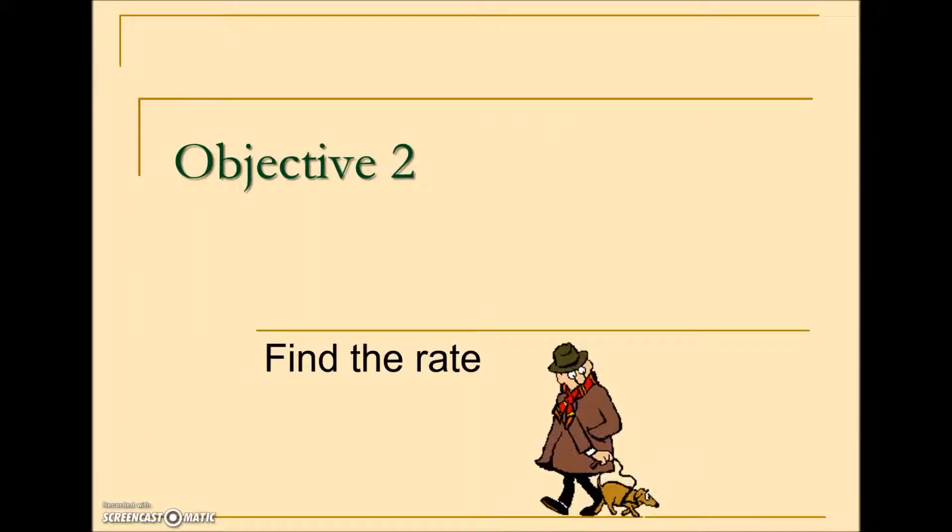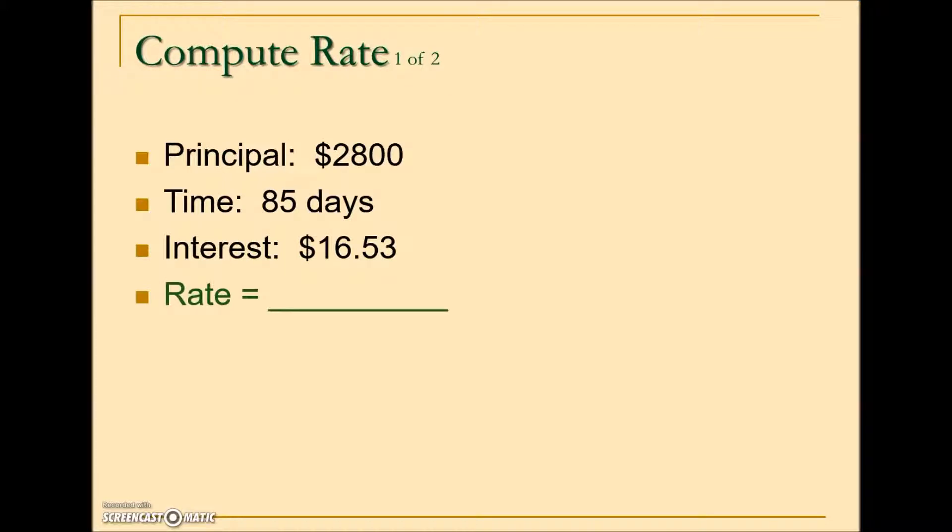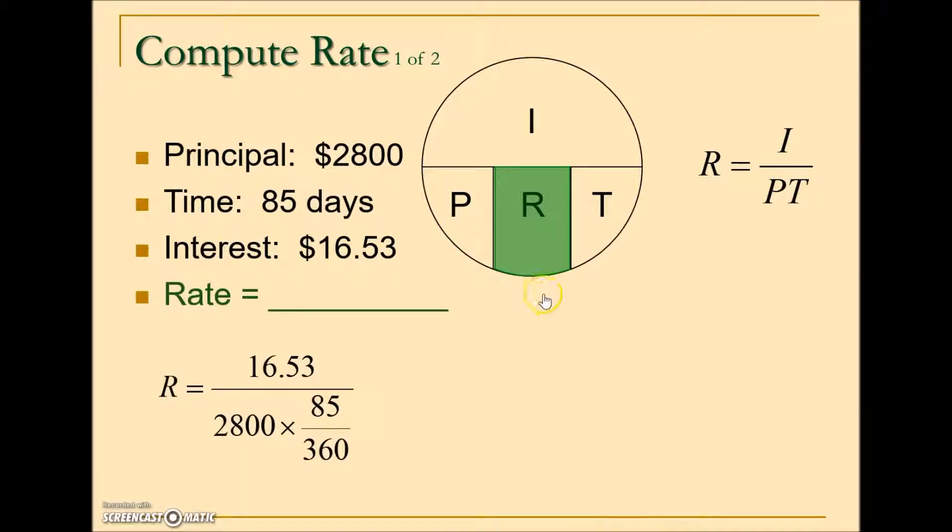Next we'll look at solving for the rate. Very similar: the arrangement of our variables when we cover up rate says that to calculate it, we will take our interest divided by principal times time. Replace those variables with the values given. The interest in this problem is $16.53. P needs to go in the denominator, so we will put 2800 in place of the principal, and it is being multiplied by time. The problem is giving us 85 days, so we use the banker's rule of 360 days in a year.